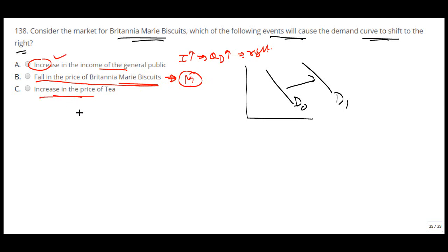Let's see the last one, increase in the price of tea. When the price of tea increases, the quantity demanded of tea will reduce. Note that Marie Biscuit is complementary to tea. People usually take it while having tea. So if they are consuming less tea, the quantity of Marie Biscuit they will consume is also lesser.